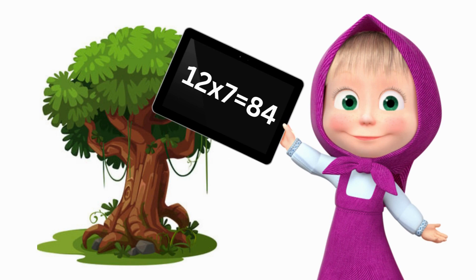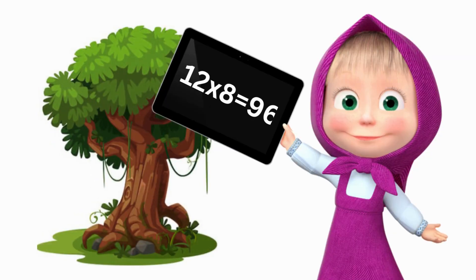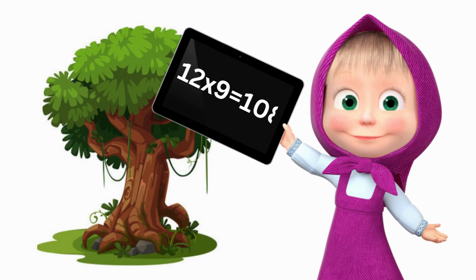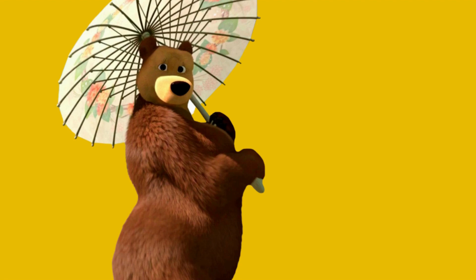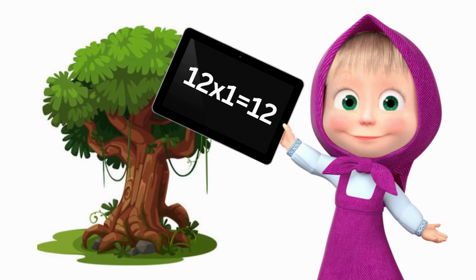12 sevens are 84. 12 eights are 96. 12 nines are 108. 12 tens are 120. Children, now shall we repeat the 12 table a little bit more fast? 12 ones are 12.